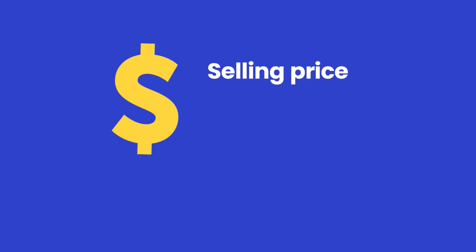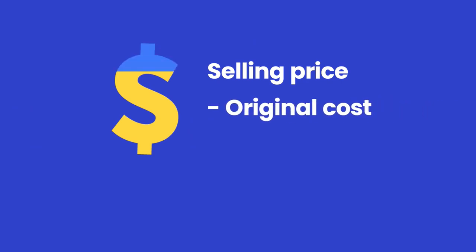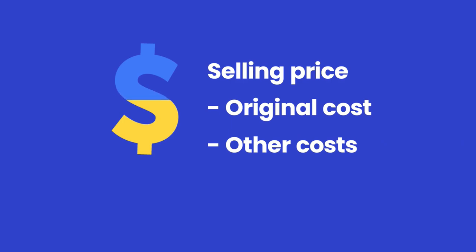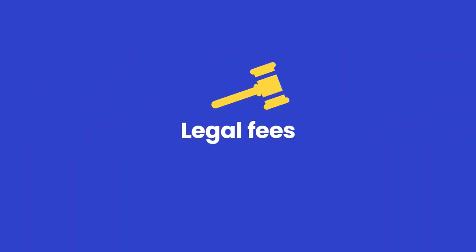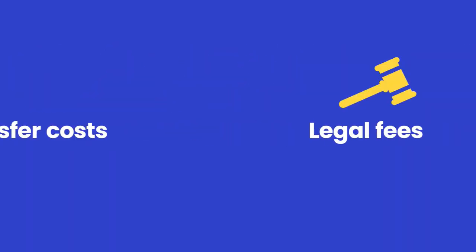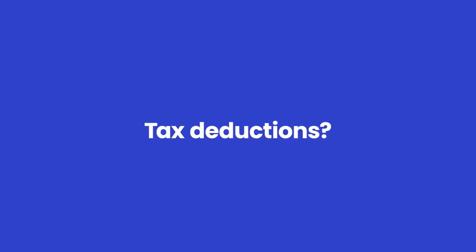Now let's look at how you can work out your capital gain or loss. From the selling price, deduct the original cost of the asset and deduct certain other costs associated with acquiring, holding and disposing of the asset. These other costs could include non-deductible interest on loans, stamp duty, legal fees and transfer costs. Generally, you do not include any costs for which you can claim a tax deduction.